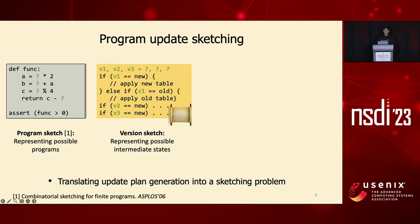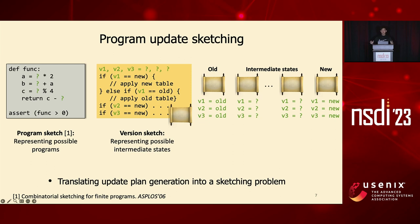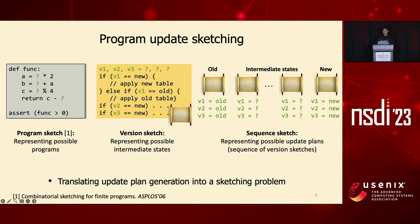The concrete values of those sketching holes act as version control variables that control which part of the logic runs during the update, allowing us to represent any arbitrary intermediate state possible during the update. Eventually we need to represent the entire update plan, which starts with the old version and ends with the new version where all sketching holes take the value of new, with an indefinite number of intermediate states in between. This is what we refer to as a sequence sketch — it represents all possible update plans as a sequence of version sketches and serves as the actual input to our synthesis engine.